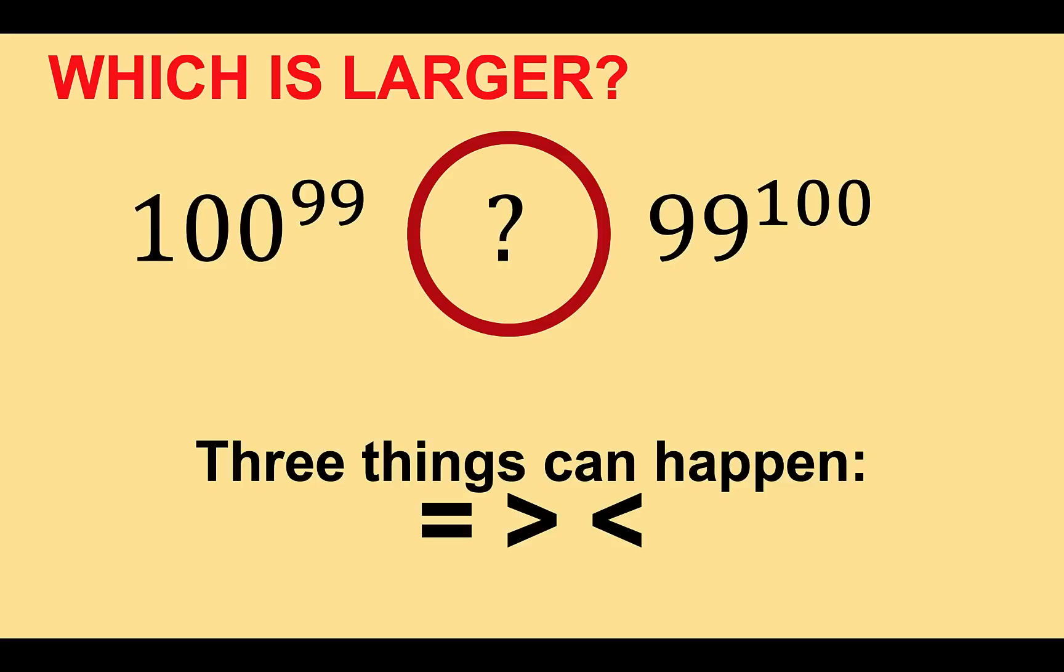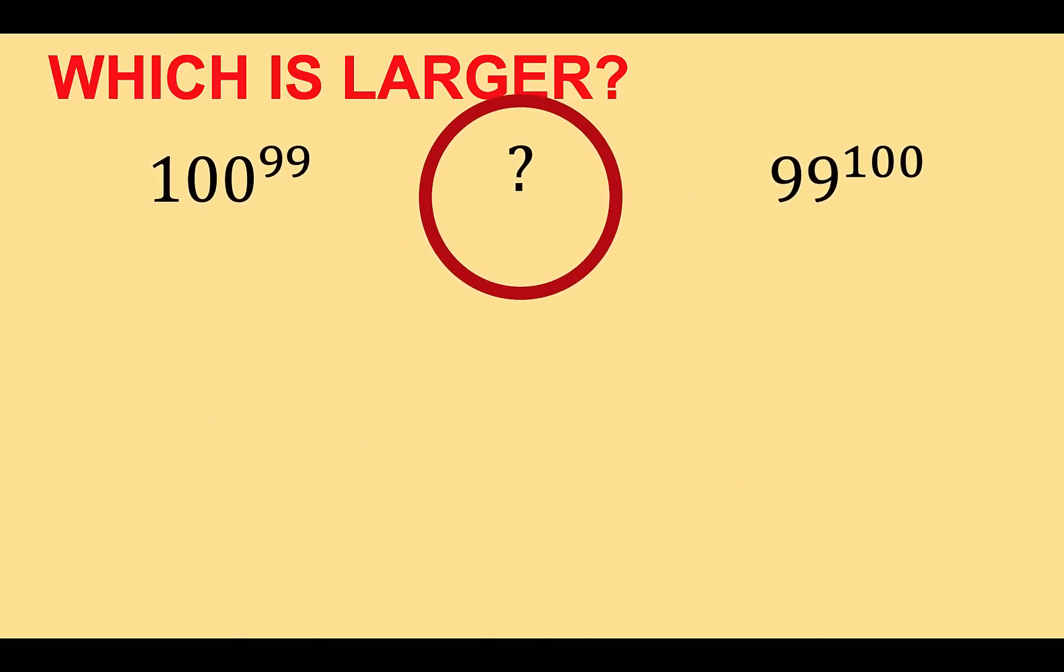Now since these numbers are big numbers and we are not allowed to use a calculator, then logically our tendency is to make these numbers smaller so that we can compare those values. And the way to make a number smaller is either you subtract or you divide. But in this case, it's easier to divide by a certain constant to make the value smaller. So let's carry out that plan.